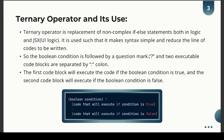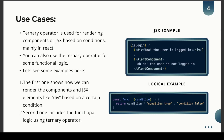First we state the boolean condition, then type a question mark, then write the code that will execute if the condition is true. That is followed by a colon, and after that the code that will execute if the condition is false. The first code block executes if true, the second if false.